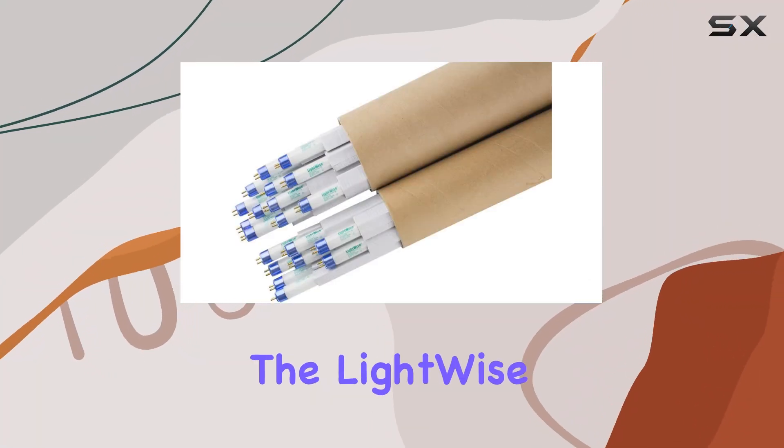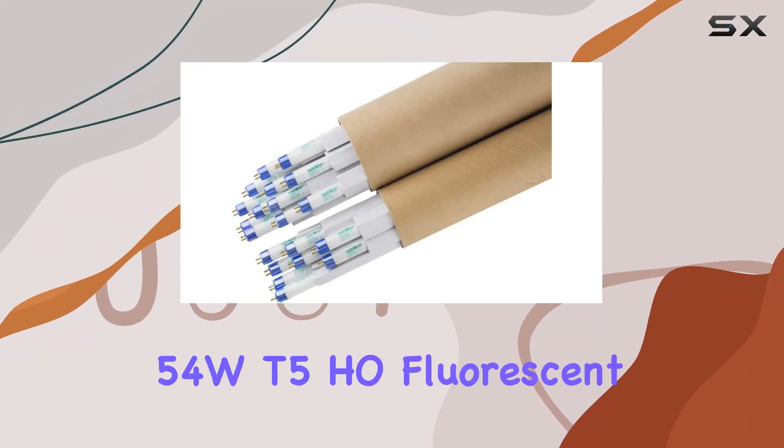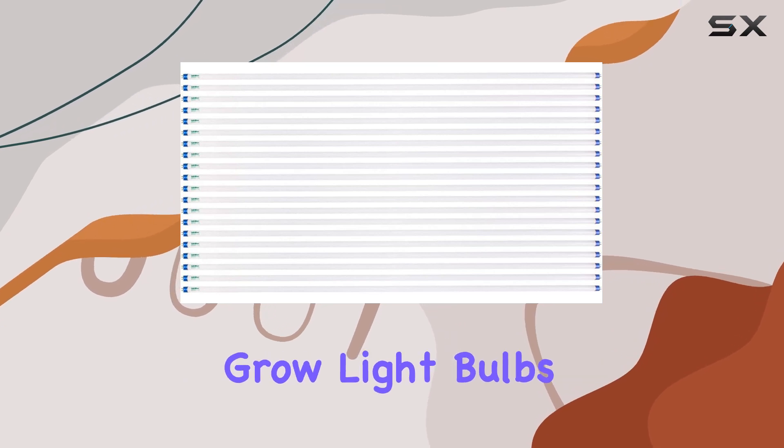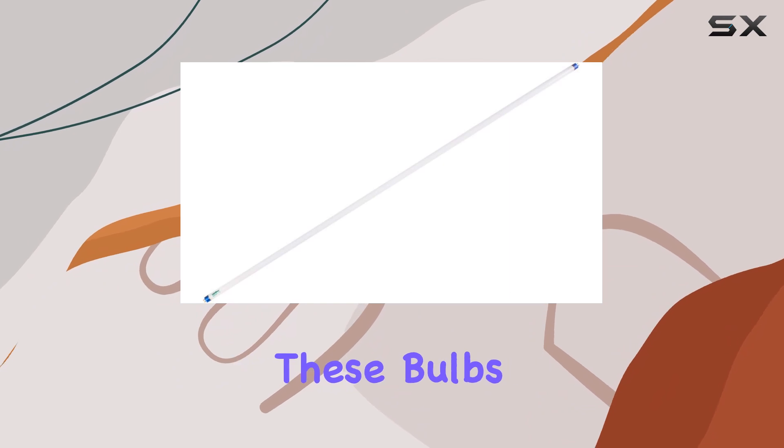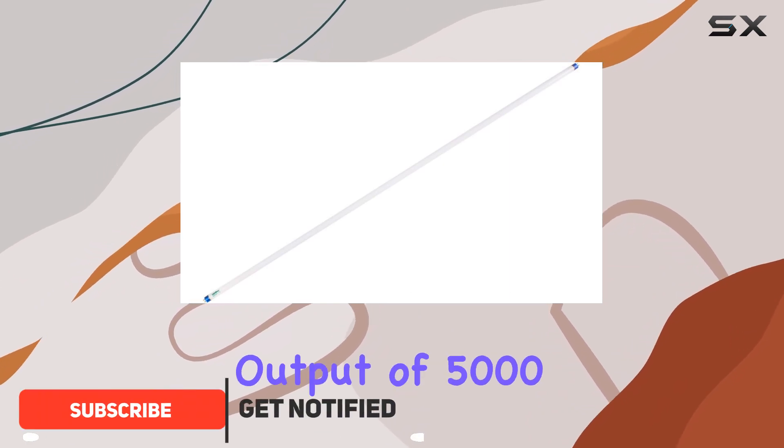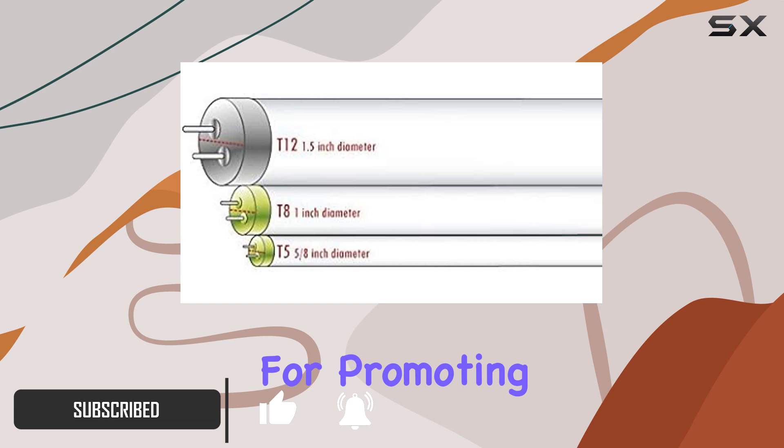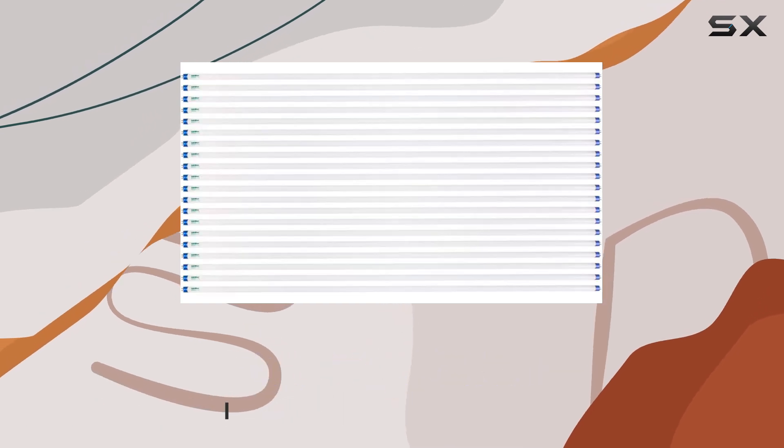Today we're diving into the LightWise 54WT5HO Fluorescent Grow Light Bulbs, specifically designed to supercharge your indoor gardening setup. These bulbs boast a high output of 5,000 lumens, ideal for promoting vigorous plant growth during the vegetative stage.